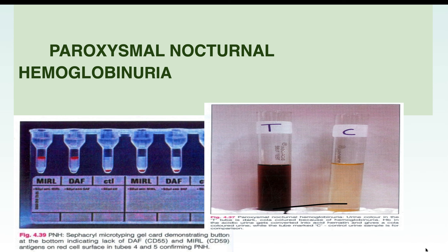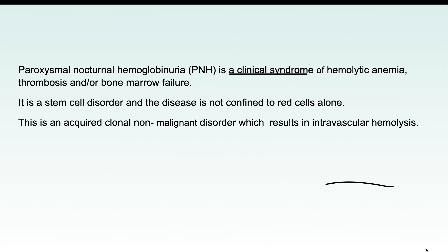We will discuss Paroxysmal Nocturnal Hemoglobinuria, also known as PNH. The topics covered are: introduction to PNH, the clinical picture, and the pathogenesis. PNH is a clinical syndrome in which a patient presents with hemolytic anemia, features of thrombosis, and bone marrow failure. One important thing to note is that it is a stem cell disorder.